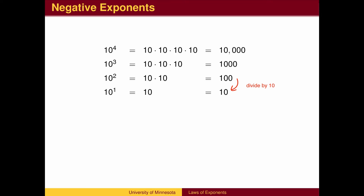Anything to the first power will be itself. If we divide once more by 10, we now have no tens remaining. This empty product is the same as multiplying by 1. Anything to the zero power is 1.